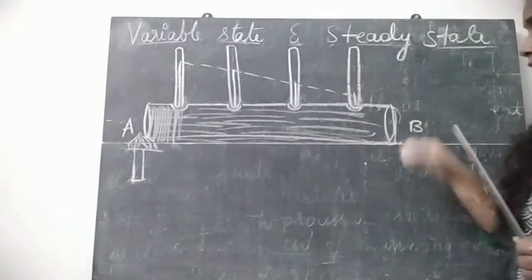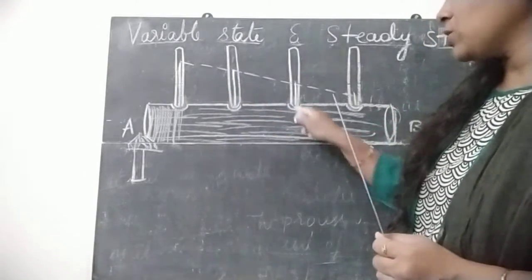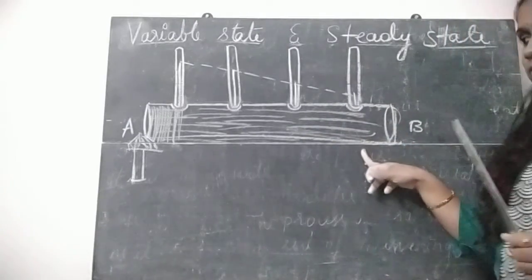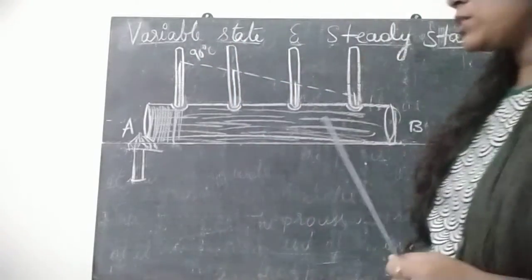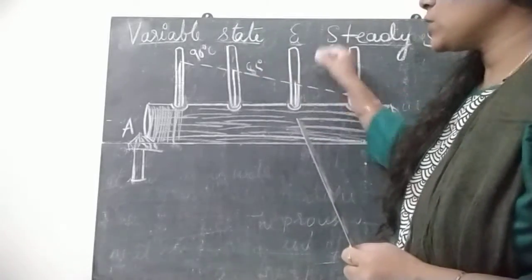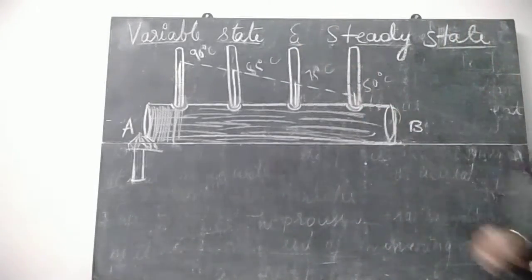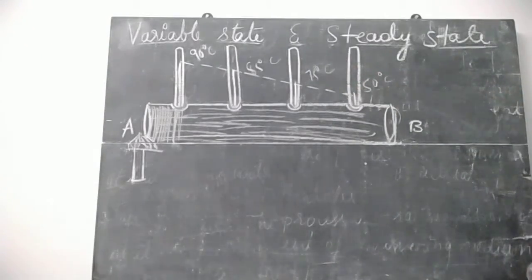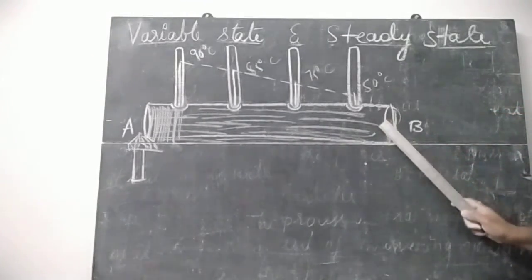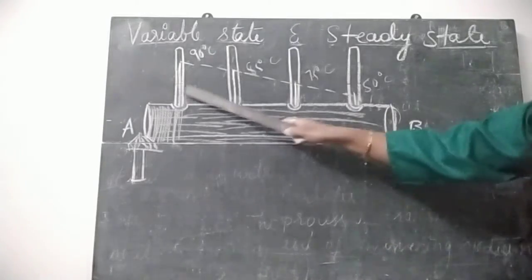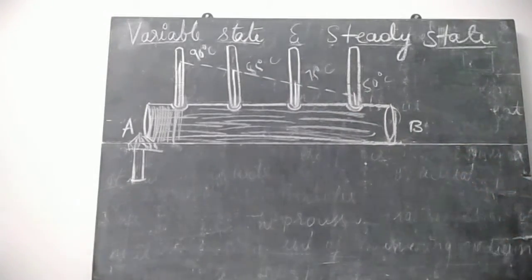Energy sharing takes time. As the energy is shared along the rod, the thermometers show rising temperatures. Let the first thermometer read 90 degrees Celsius, the next 85 degrees Celsius, then 75 degrees Celsius, and the last 50 degrees Celsius. So at first the temperatures are rising — this changing state is called variable state.